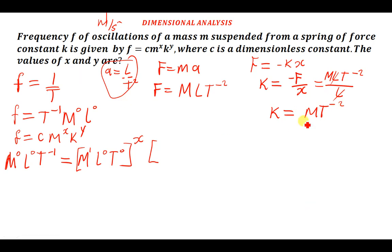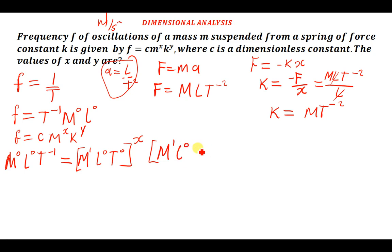Replacing k with its dimensions, we have M to the power one, L to the power zero, T to the power negative two, all raised to the power y. So the full dimensional equation is now set up with the mass term raised to x and the k term raised to y.